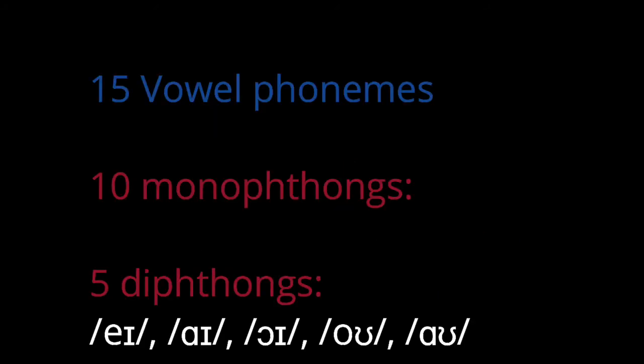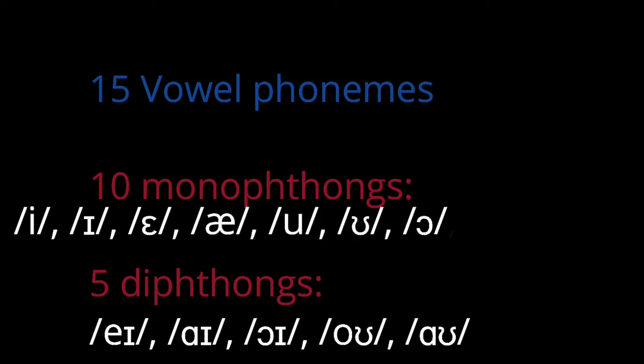These are the phonemes of American English. There are 15 vowel phonemes: ten monophthongs—i, ɪ, e, æ, u, ʊ, ə, ɔ, ɑ, ʌ.